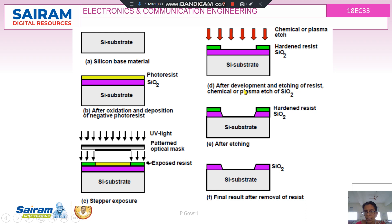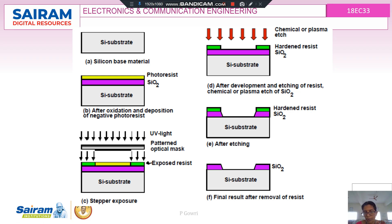After development and etching of the photoresist, the desired pattern is obtained on the device. The hardened photoresist can be removed by means of acid, leaving only the desired opening in the oxide layer. For each process step, whenever an opening or pattern is needed in the device, the photolithography process is used.